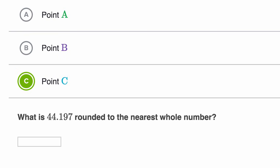And then they say what is 44.197 rounded to the nearest whole number? Well there's a couple of ways to think about it. You could just look at the tenths place and say look, that's less than five, so we round down to 44.